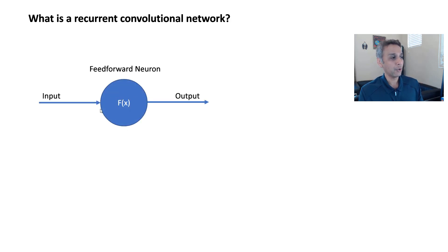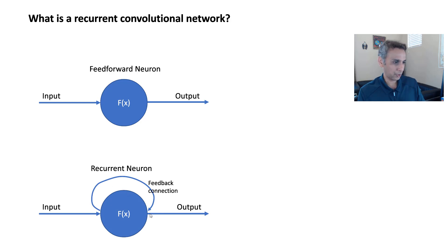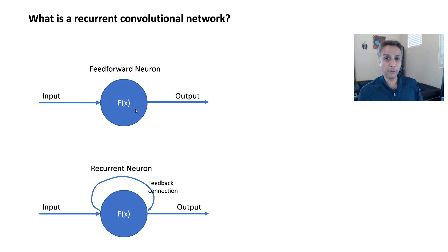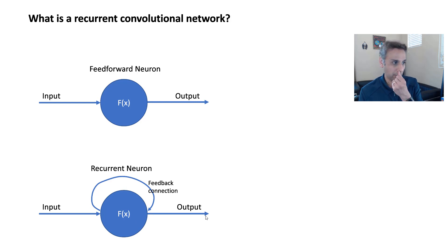Let's look at a feedforward neuron — or think of this as a convolution block. Input comes in, there is an output, and you're mapping output to input via function x. In a recurrent neuron, the input goes through exactly like a regular feedforward neuron, except there is a feedback connection — the output goes back into the input. This feedback connection can happen n times, say n equals five, so it goes back five times before handing off to the next neuron or block. That's what recurrent basically means.